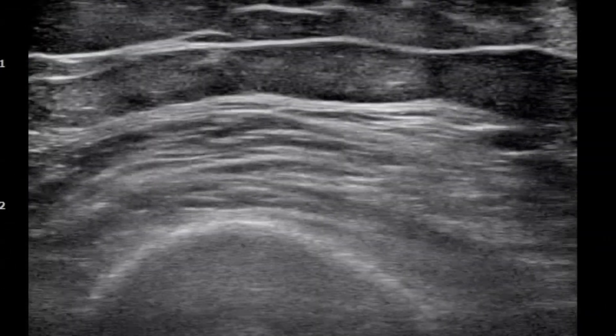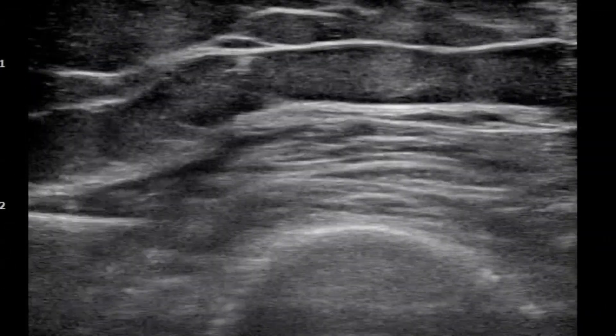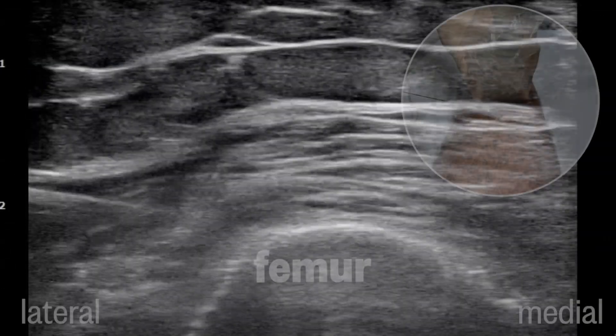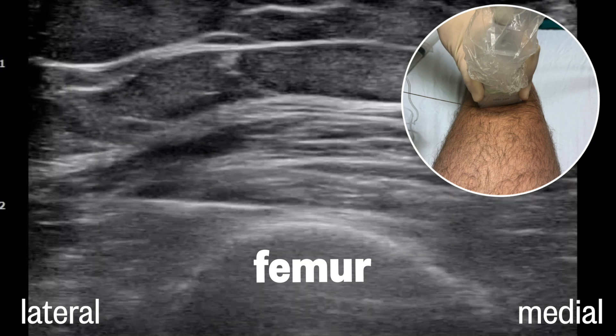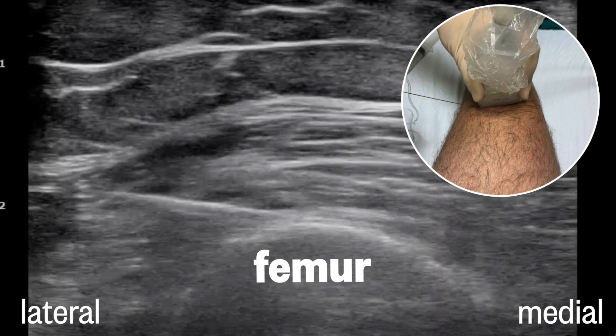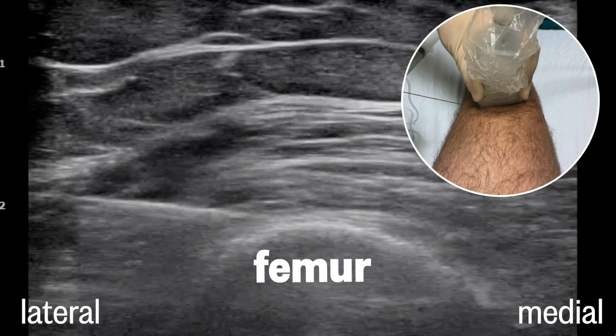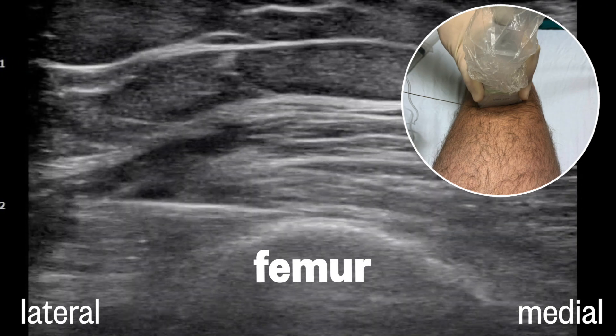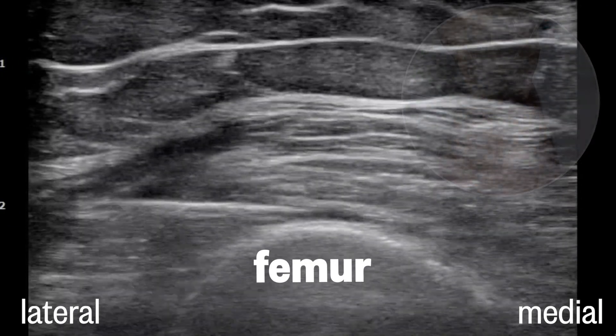Here's the block for the nerve to vastus intermedius. The probe is transverse, a few finger breadths above the patella, and five mils of local is placed on the femoral shaft right at 12 o'clock.